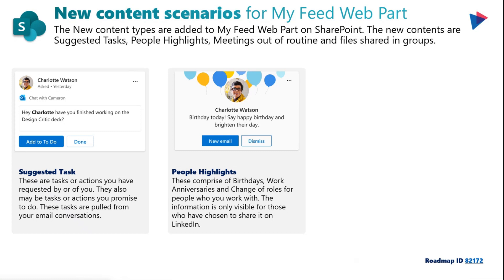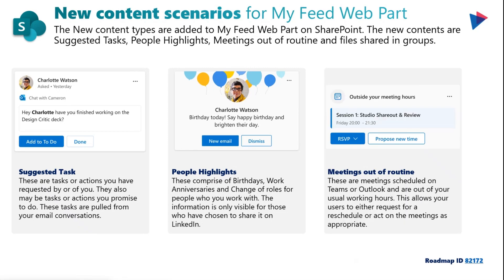People highlights are now also being surfaced. The information is only visible for those who have chosen to share it, pulled from LinkedIn. These comprise birthdays, work anniversaries, and new roles for people you work with. For example, Charlotte has a birthday today and you can choose to dismiss it or reach out to say happy birthday. Additionally, if you've defined your working hours in Microsoft Outlook and there are meetings scheduled outside those hours, the My Feed web part will prompt you to propose a new time slot or take action.